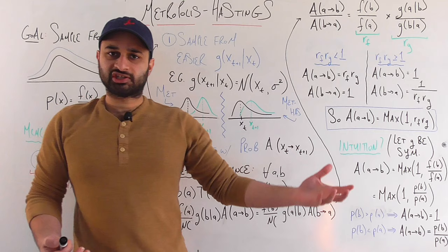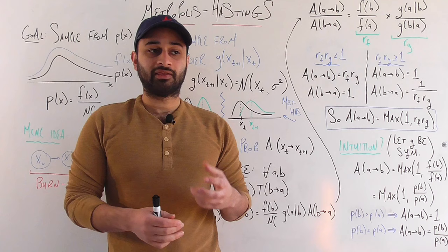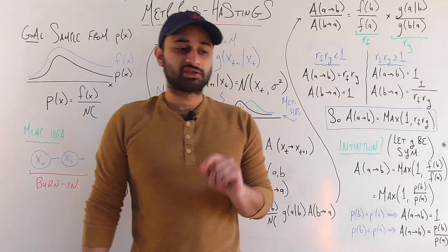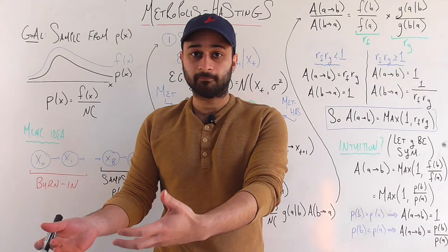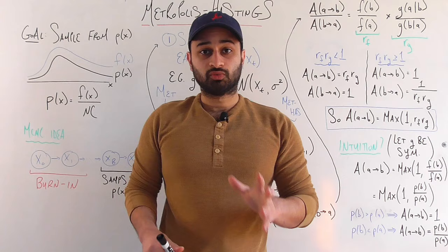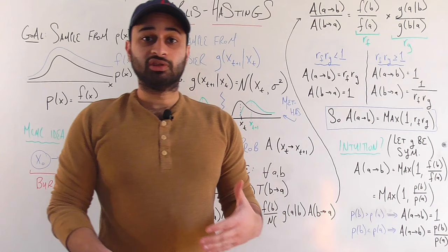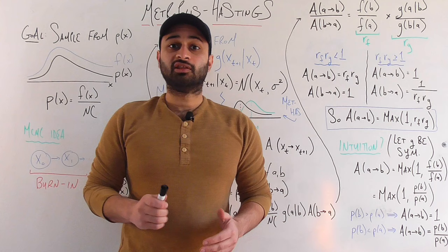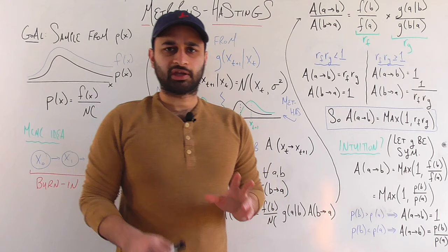Just like with accept-reject sampling, we are going to propose some kind of candidate — a possible next state to consider. But here's the first difference: in accept-reject sampling, the candidate was independent, drawn from a fixed distribution such as a normal with a fixed mean. Here we know explicitly that the next sample depends on the previous one. So instead of a fixed mean, we set the mean of the proposal normal distribution to be exactly the previous sample x_t.